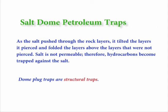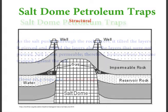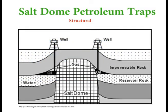Now, let's look at salt dome traps. We've got quite a few salt domes in the Gulf of Mexico region, also some on land in Louisiana and in Texas. As salt pushed through rock layers, it tilted the layers it pierced and folded the layers above that were not pierced. Salt is not permeable. Therefore, hydrocarbons become trapped against the salt. There's a good picture of what salt will actually do and how it causes a structural trap. Salt dome petroleum traps are structural traps.